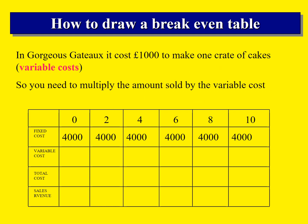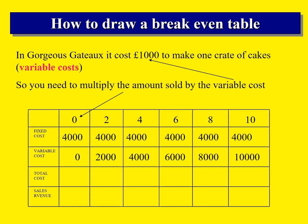The next line we're going to add in is our variable costs. It costs £1,000 to make one crate, so what we need to do is multiply the amount sold by the variable costs. So if I make no crates of cakes at £1,000 per crate, it's going to cost me nothing. If I make two crates at £1,000, it's going to cost me £2,000. And then four — £4,000; £6,000; £8,000; £10,000.